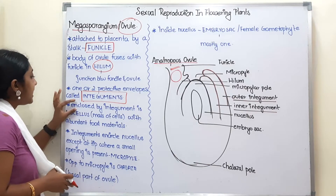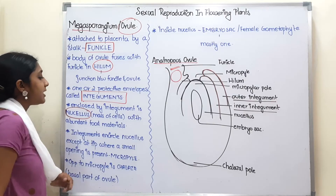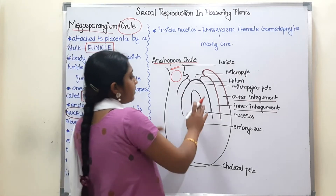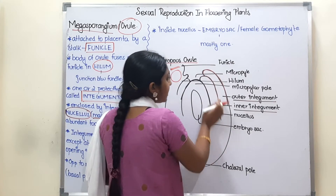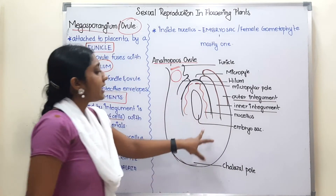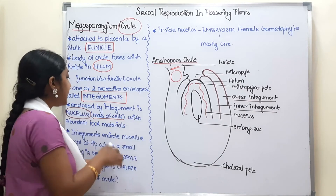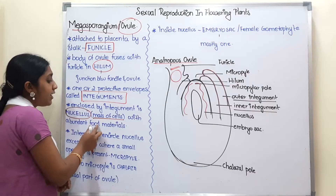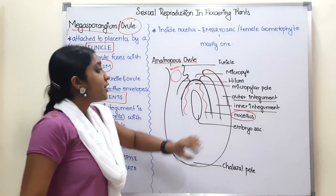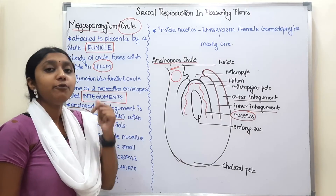Enclosed by the integuments is the nucellus. What is the nucellus? The nucellus is nothing but a mass of cells with abundant food materials. So inside the integuments is the nucellus, which contains many food materials.